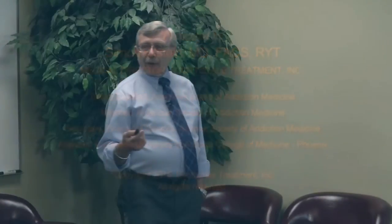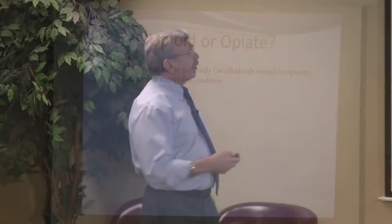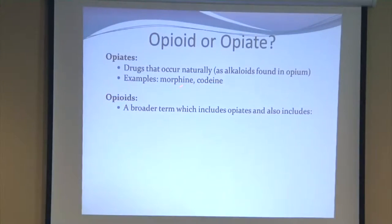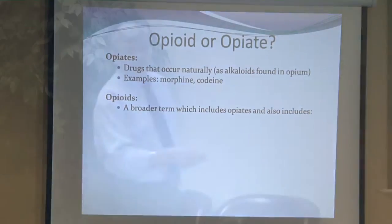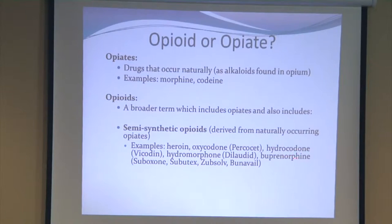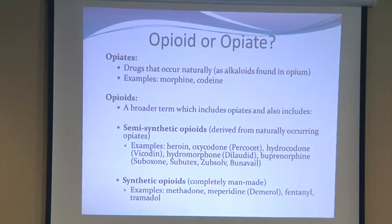Is it opioid or opiate? An opiate by definition is a drug that occurs naturally, found in opium — examples include morphine and codeine. Opioid is a broader term that includes opiates but also semi-synthetic opioids, which are derived from natural substances. Examples include heroin, Percocet, Vicodin, Dilaudid, and buprenorphine. Fully synthetic opioids are completely man-made — methadone is one example, which is another difference between buprenorphine and methadone.